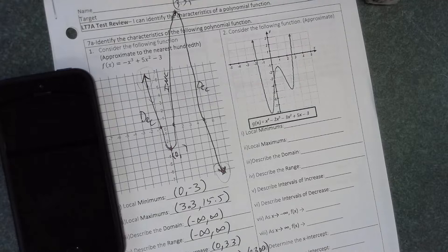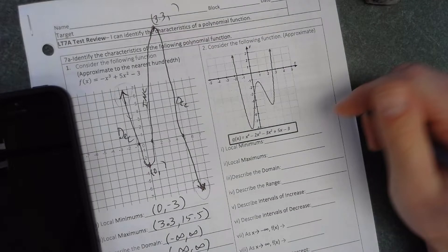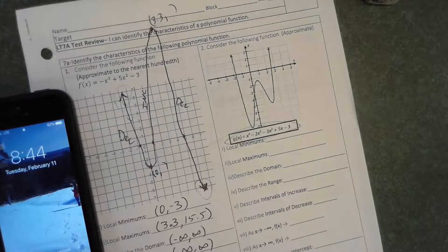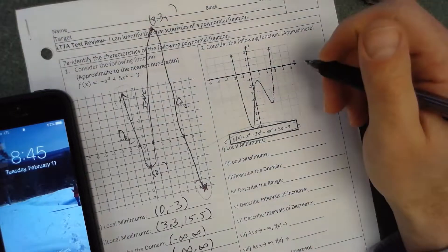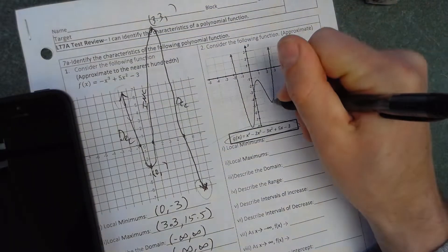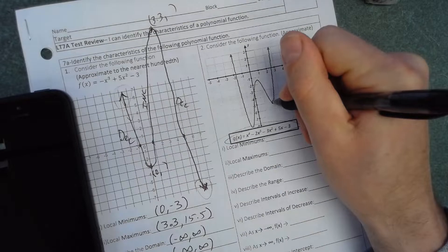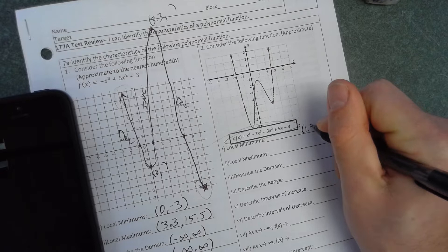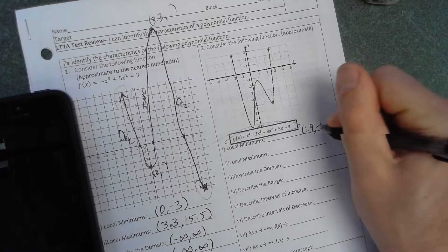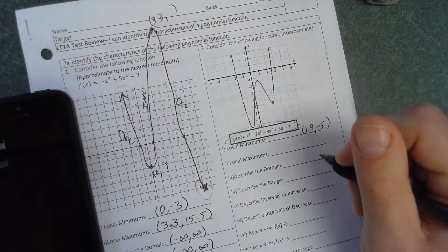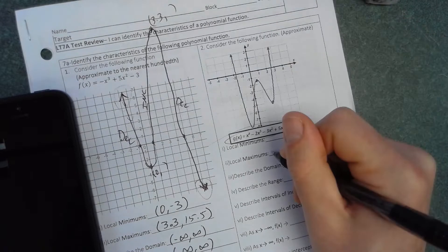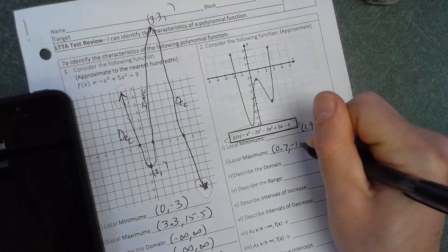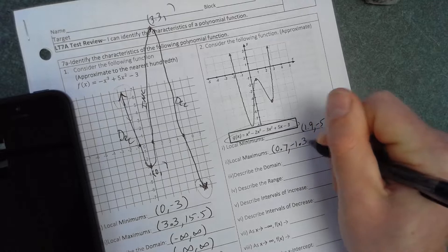Now we have that filled out. Now we have to do that same thing for number two. With the graph already given to you, if we give you the equation, you can plug it into Desmos to get a little more accurate. Otherwise, I would just recommend just going off the graph and kind of estimating. It looks like we have a local minimum here at about 1.9, you could say 2, and I would say it's at negative 5. There's a local maximum here at 0.7 and negative 1.3 approximately.